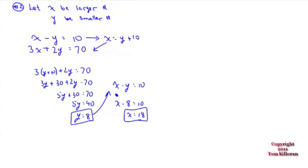What's so hard about that? You just have to read it — the problem tells you the difference, 3 times one, and 2 times the other. They give you everything; you just have to write it on paper. That's the simplest one up there. Now they get harder, but we start small to get comfortable.